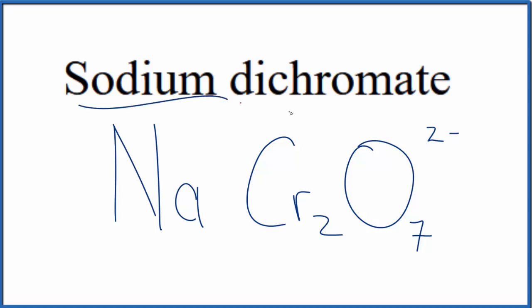Since sodium is a metal and dichromate is a group of nonmetals, we have an ionic compound. So we have to consider charge.